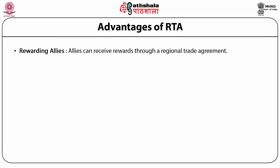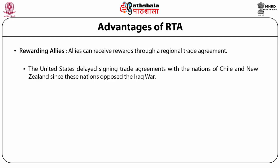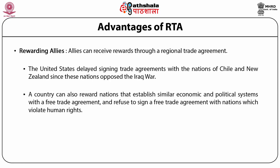Rewarding allies: Allies can receive rewards through a regional trade agreement. For example, the United States delayed signing trade agreements with nations of Chile and New Zealand since these nations opposed the Iraq war. A country can also reward nations that establish similar economic and political systems with a free trade agreement, and refuse to sign agreements with nations which violate human rights.